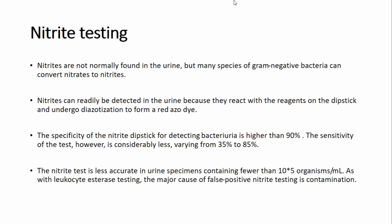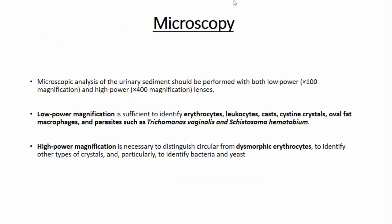Nitrite testing relates to bacteria. Nitrites are not normally found in urine, but nitrates are. Some gram-negative bacteria convert nitrates in the urine to nitrites, which gives a clue that bacteria are present. However, false positive results are very common, especially in contaminated urine samples.